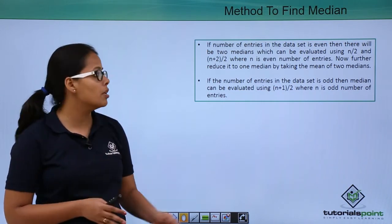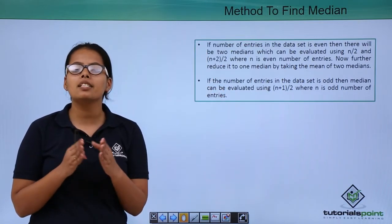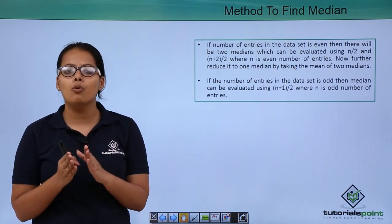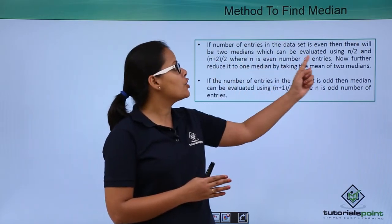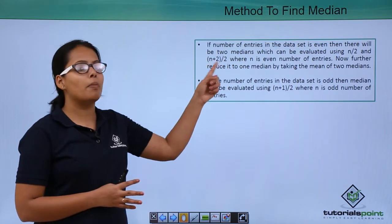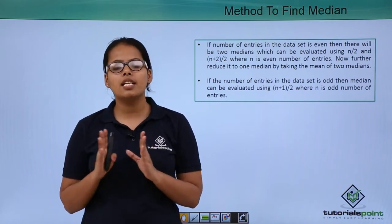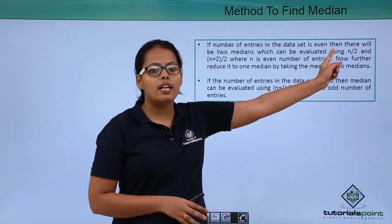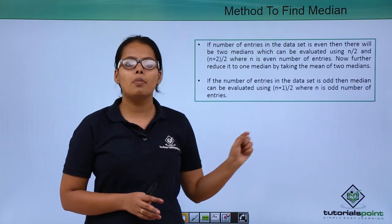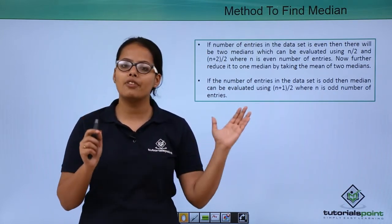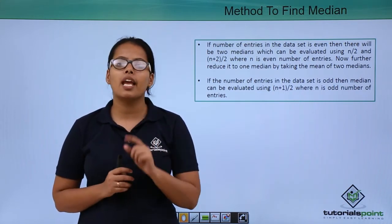Any number divisible by 2 is an even number. When entries are even there will be 2 medians. The 2 medians can be evaluated using the formulas n/2 and (n+1)/2. This tells you the rank of those two numbers. When there are 6 entries, 6/2 gives you rank 3 and (6+1)/2 which is 7/2... actually 6+2 is 8/2 gives rank 4. Numbers at rank 3 and 4 after ascending order are the 2 medians, but there can only be 1 median.